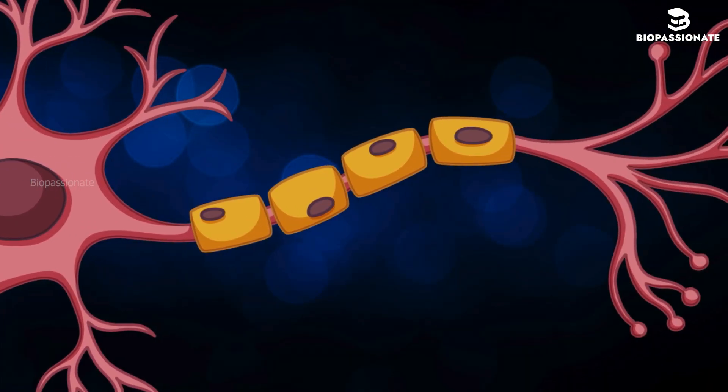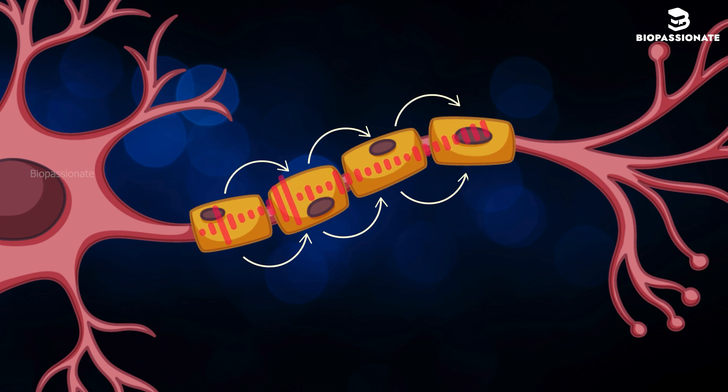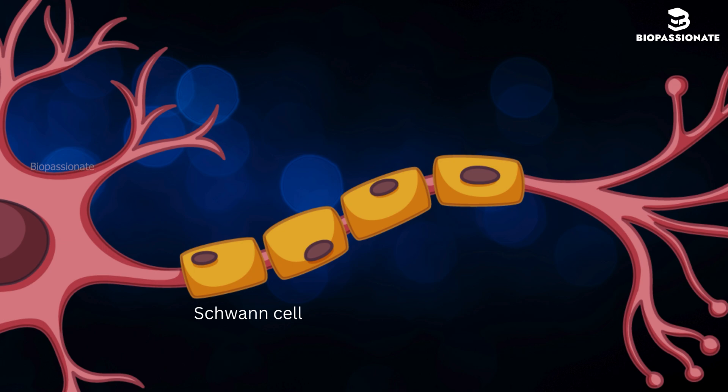Once the action potential is generated, it doesn't just stay in one place. It travels along the axon like a wave. This process is known as conduction. In many neurons, the axon is covered with a fatty substance called the myelin sheath.